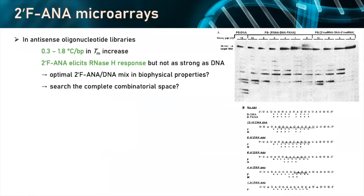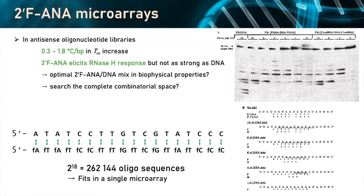Then we were interested in studying FANA in an antisense context, because the introduction of FANA roughly increases the Tm by about 0.3 to about 2 degrees per modification. It's also one of the very few chemical modifications that will still elicit RNase H cleavage of the target RNA, although not as strong as DNA. We were wondering if there was a way to find an optimal mix of DNA and FANA in a particular antisense sequence that would give good hybridization behavior as well as optimal RNase H activity. We started working on this particular 18-nucleotide sequence that targets the luciferase mRNA, where some work has been done previously at the small scale level.